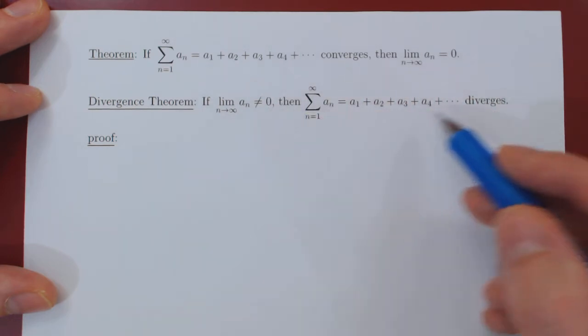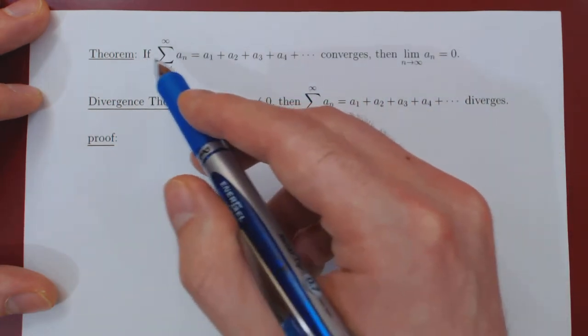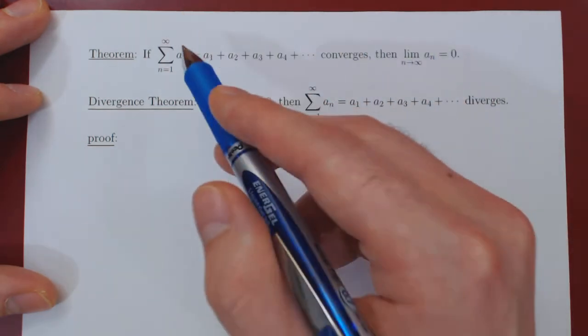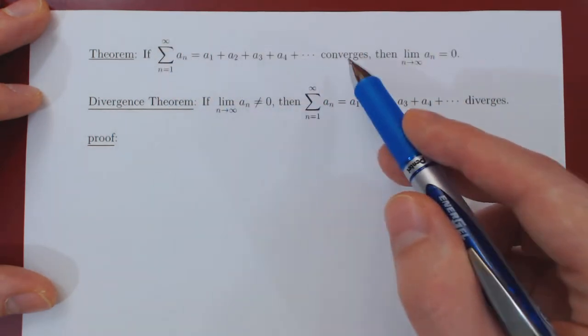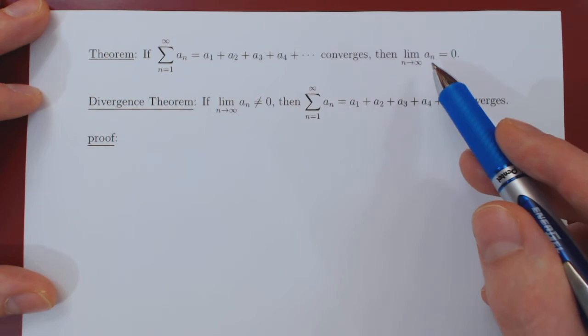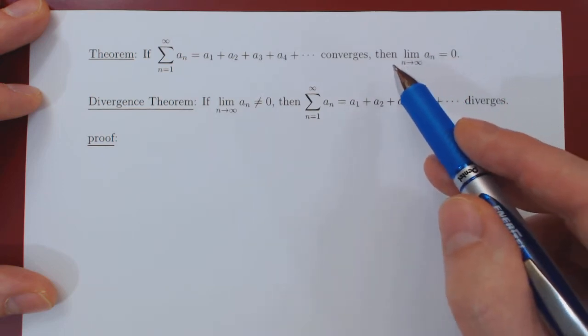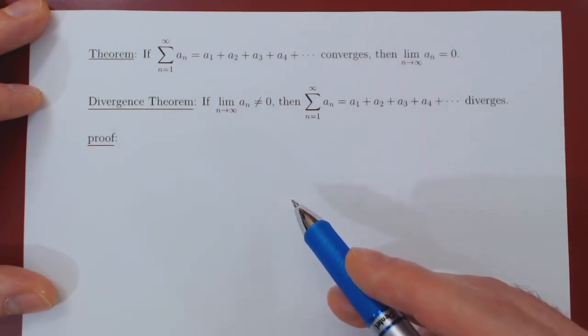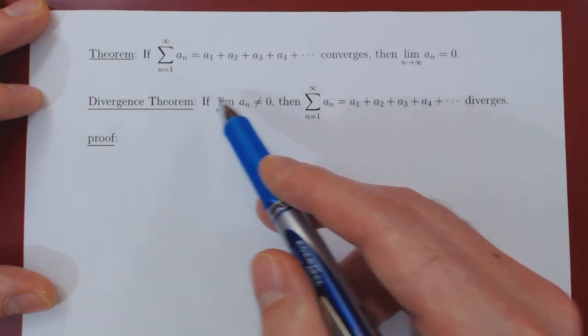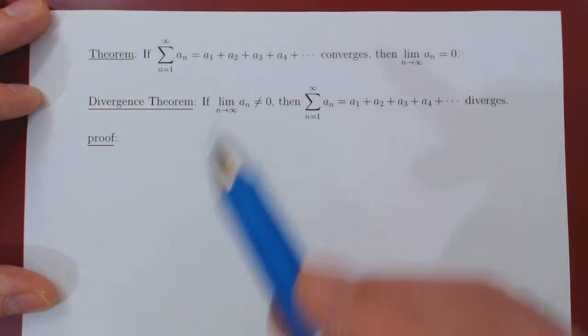We will not prove this result directly, but instead prove the equivalent result that states that if the series converges, then the individual terms must converge to zero as n tends to infinity. And again, this is simply known as the contrapositive of this statement.